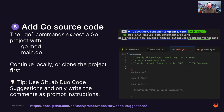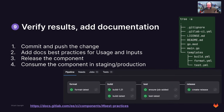Now that the code has been generated or created, you can actually run the source code. To verify the results, also add documentation: commit and push the change, add documentation for best practices, usage, and inputs, then release the component and consume it in staging or production or both. On the right-hand side, you can see the tree the Golang component should look like — a `.gitignore`, the GitLab CI configuration file, a LICENSE, a README, a `go.mod`, a `main.go`, and then different templates for `build`, `format`, and `test` inside the component.